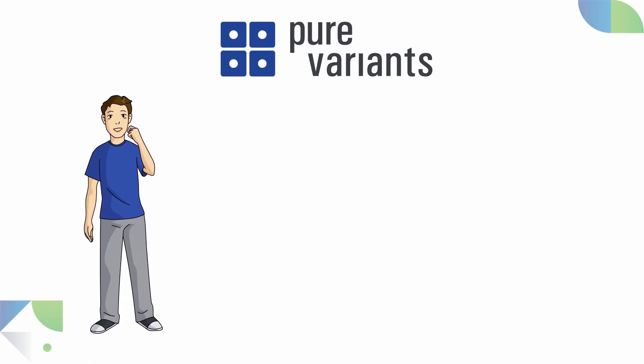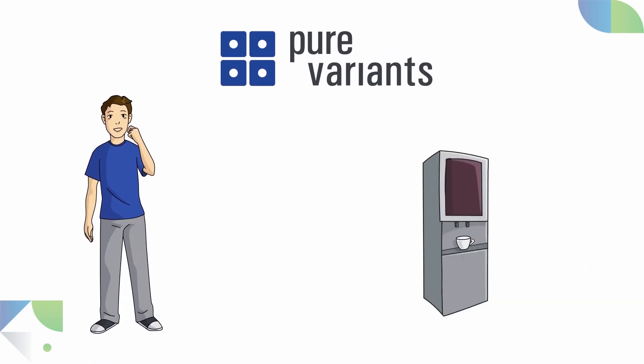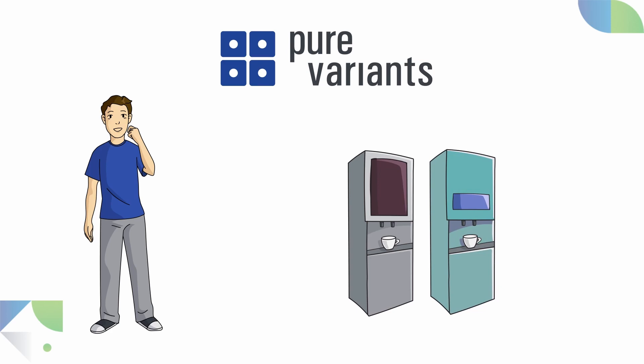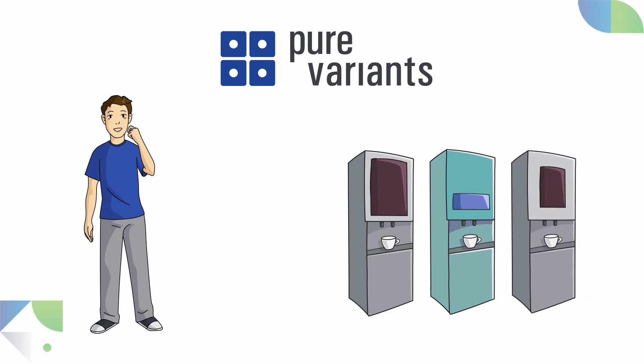Ben wants to implement product line engineering with Pure Variance to improve the development of his coffee vending machines and manage their increasing complexity. But how exactly does it work?